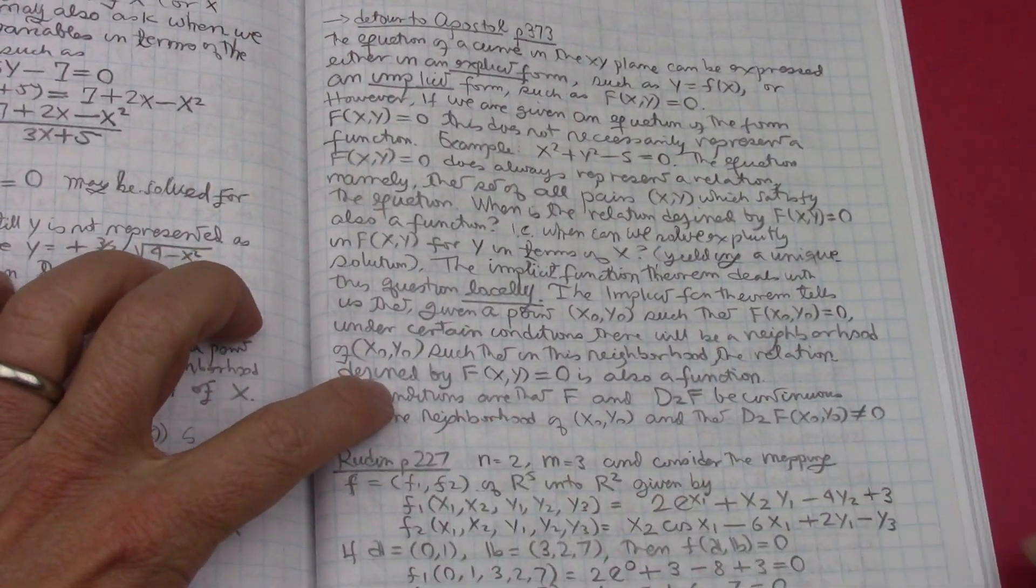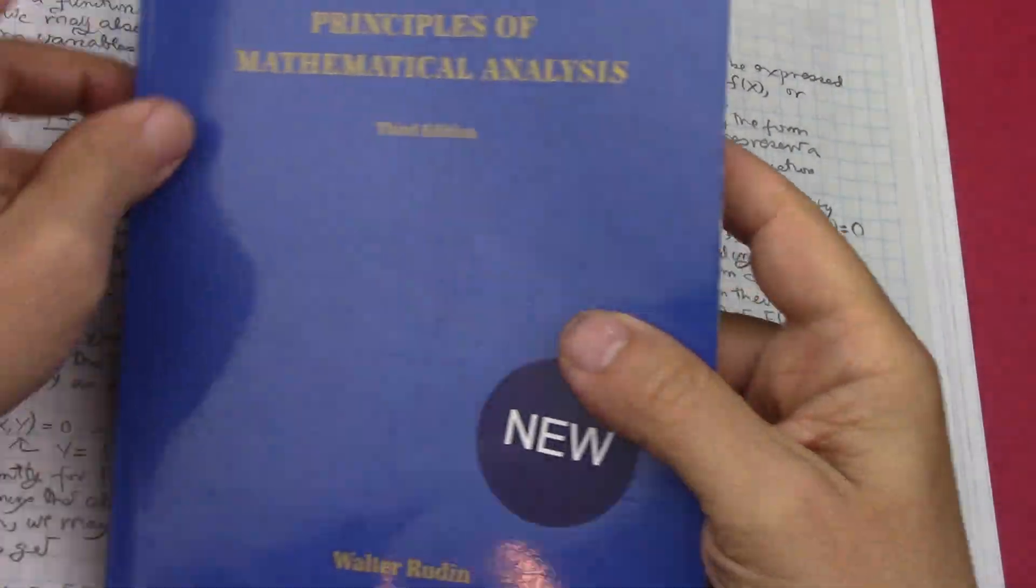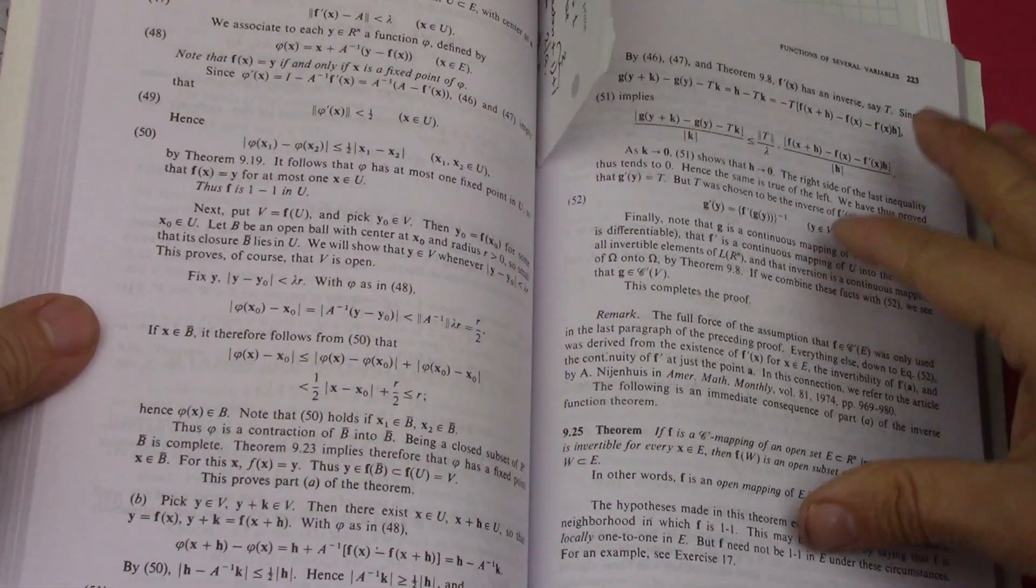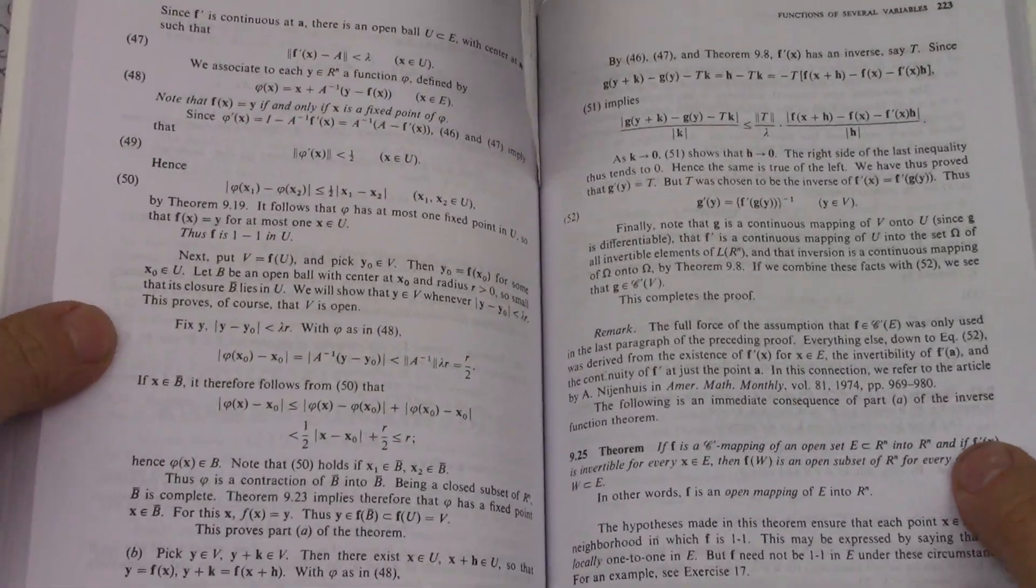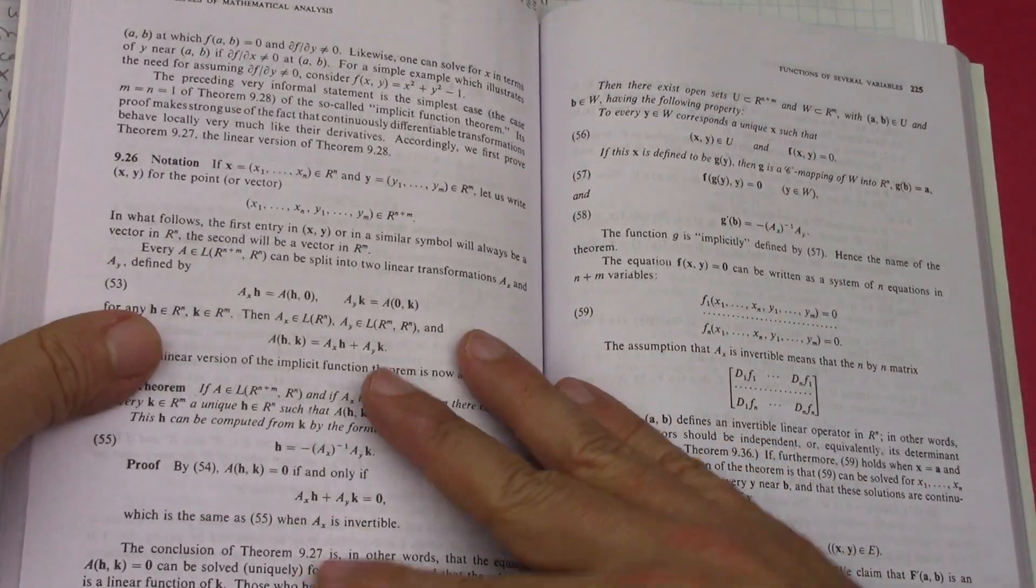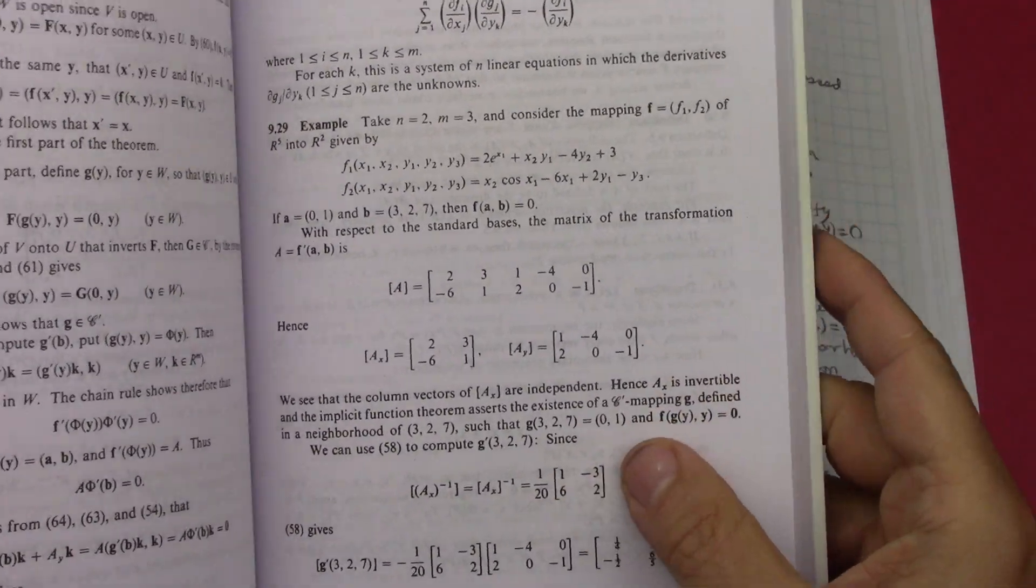Then I went into Rudin, and Rudin has an example. As always, Rudin has the best examples. The explanations for the theorem are sometimes really hardcore, very difficult to read, but Rudin's example is really, really good.